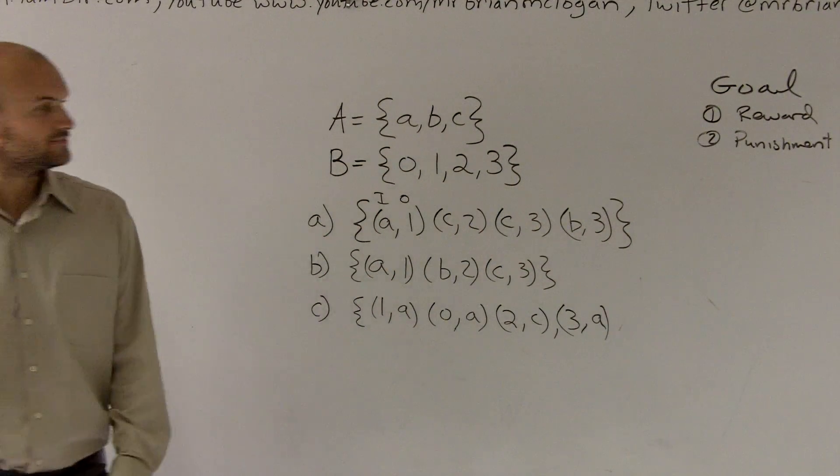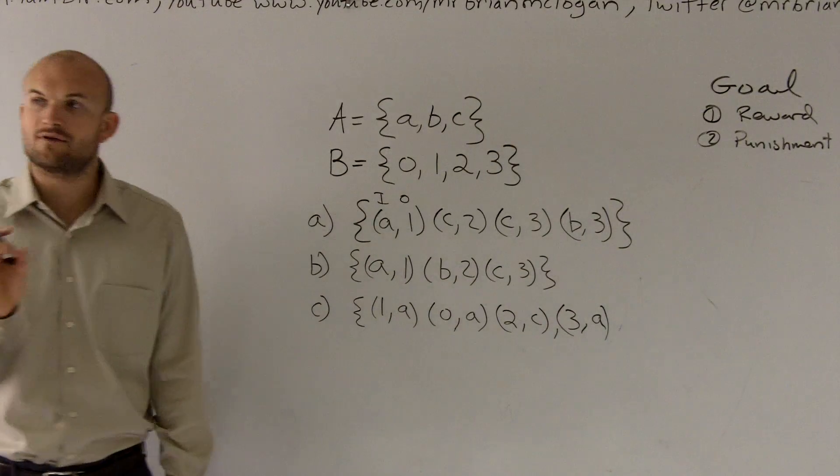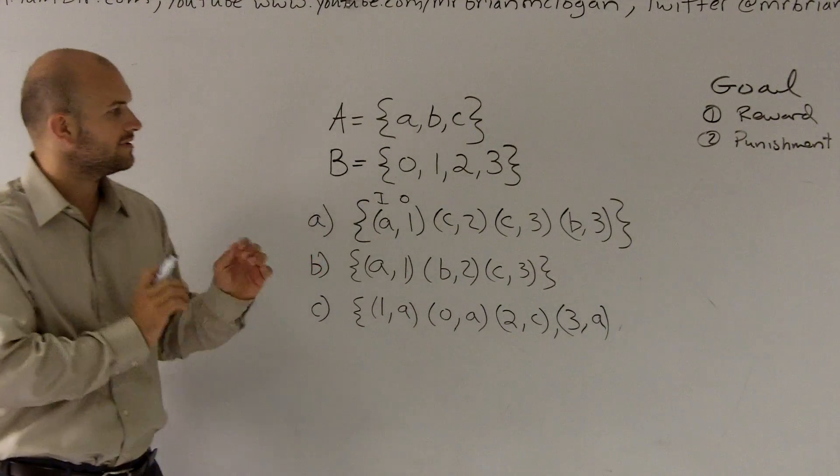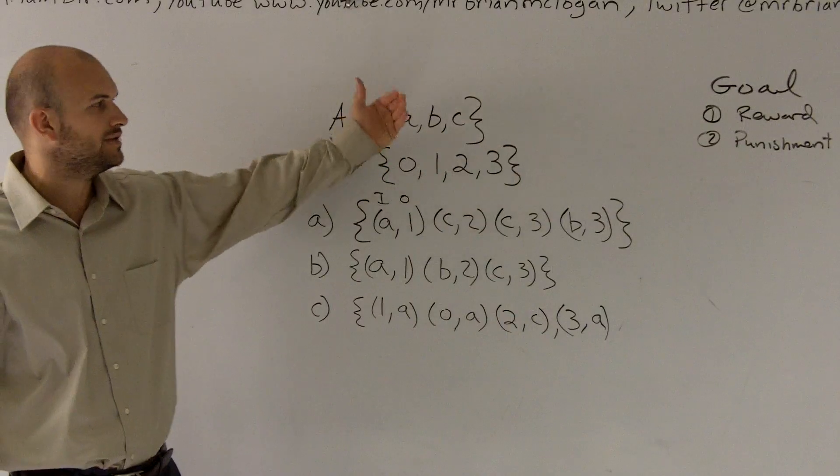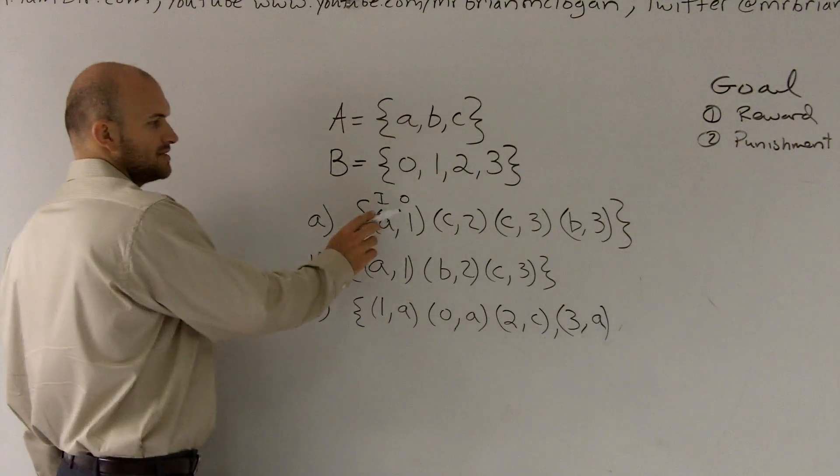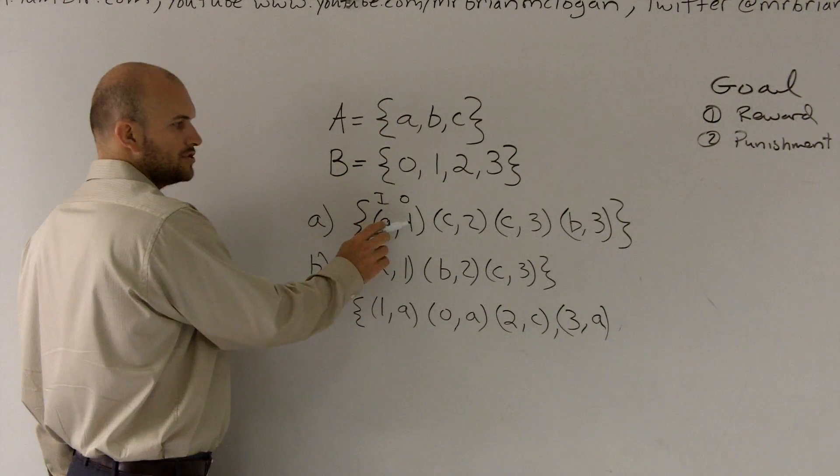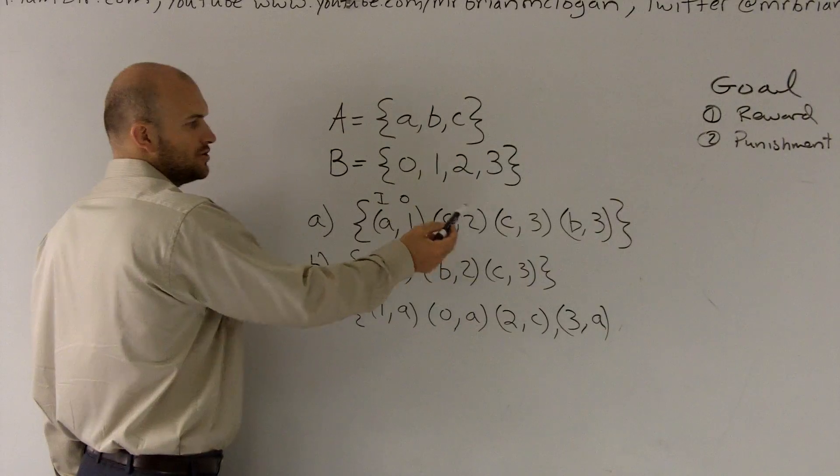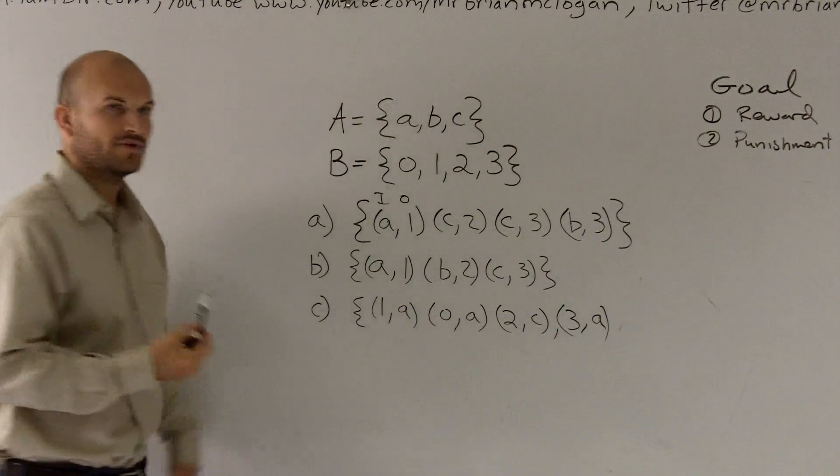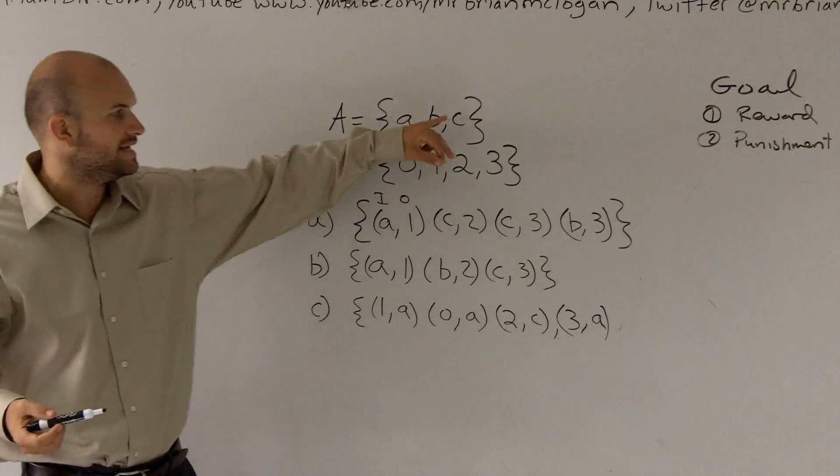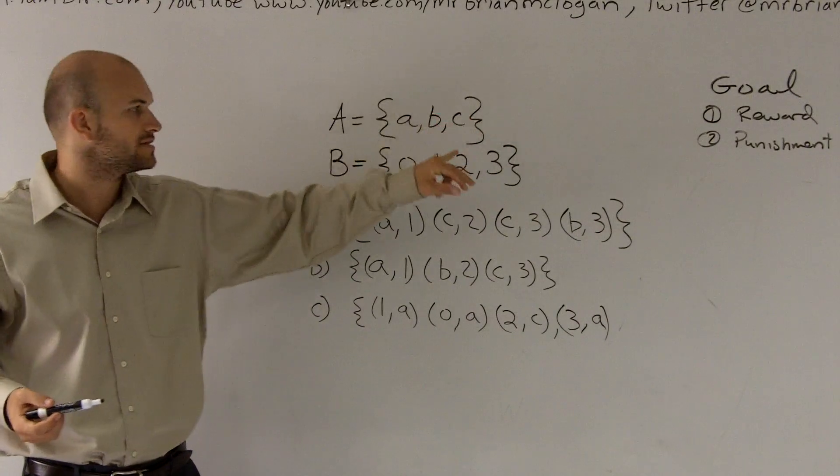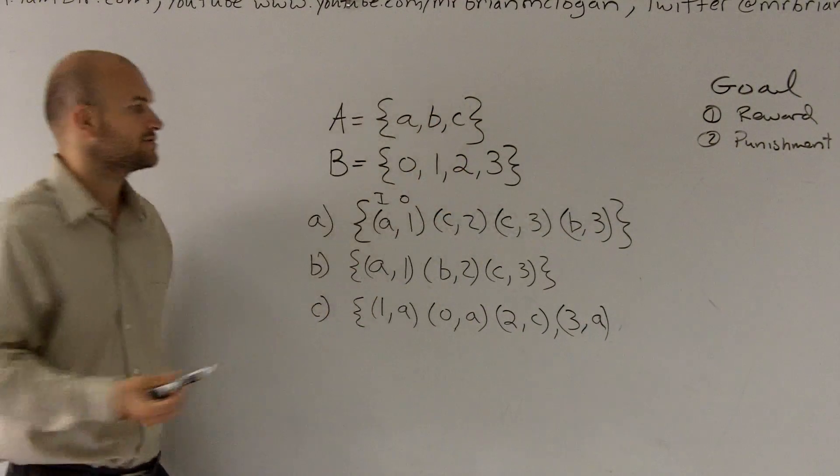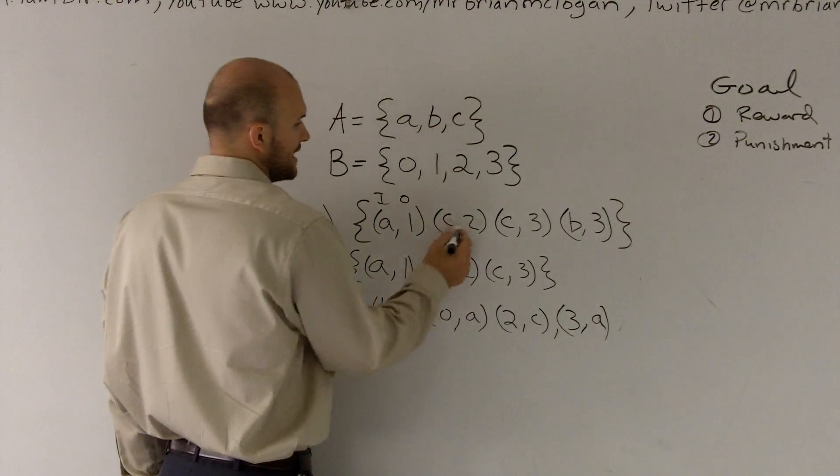Then the next thing that we needed to look out for to determine if it was a functional relationship was if everything that they mapped to was unique. And what we look over here is we notice that A maps to one, which is unique. However, C maps to two and C maps to three. So therefore, that is not a unique relationship, because C maps to two different output values. So therefore, this is not a function.